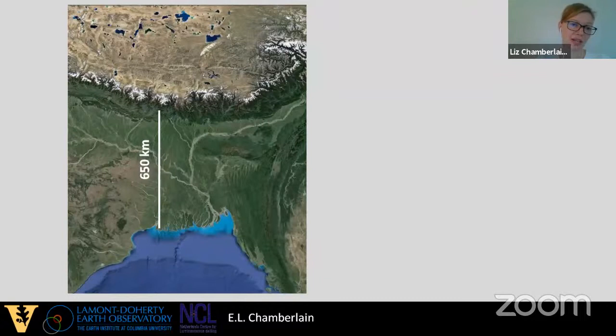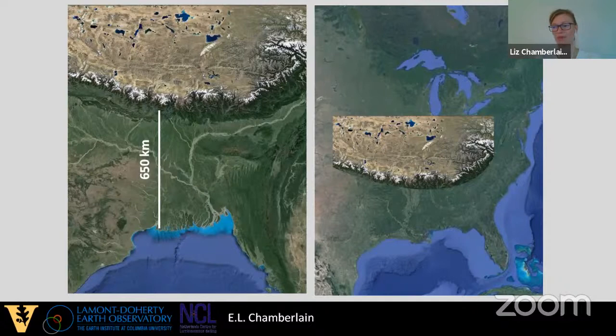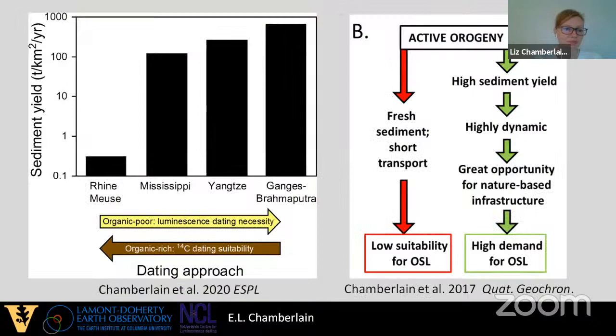The Ganges-Brahmaputra delta is so close to the Himalayas — only 650 kilometers linearly from the front of the Himalayas to the present-day coast, comparable to having the Himalayas sitting near Memphis for the Mississippi system. This drives rapid production of very mineralogically young sediment, making luminescence dating difficult. Unfortunately, it also limits the availability of organic material for radiocarbon dating.